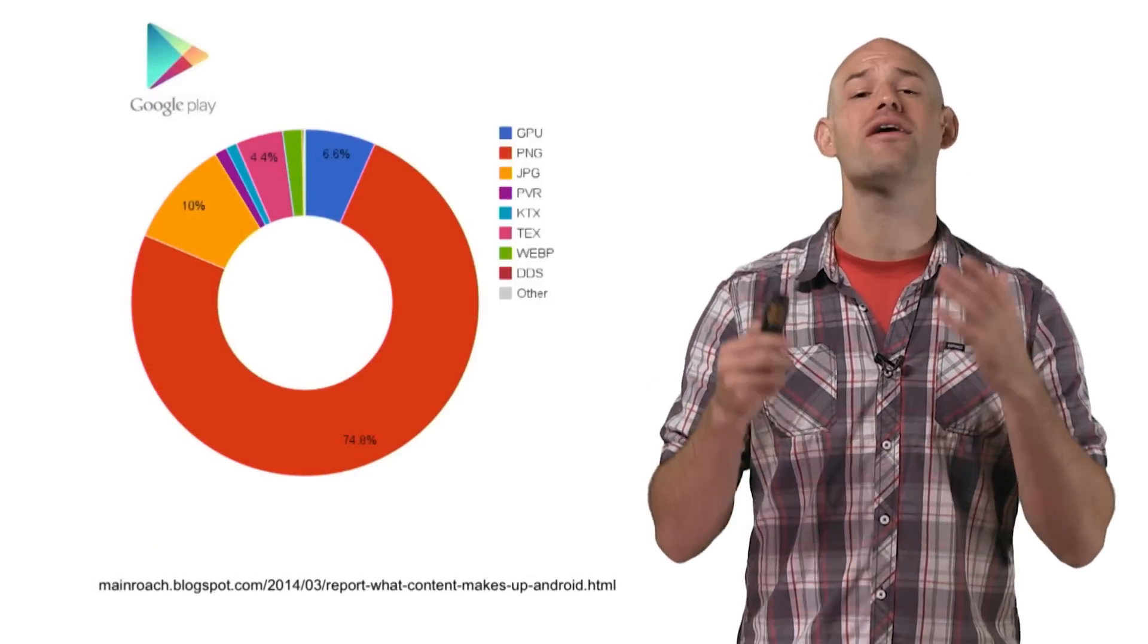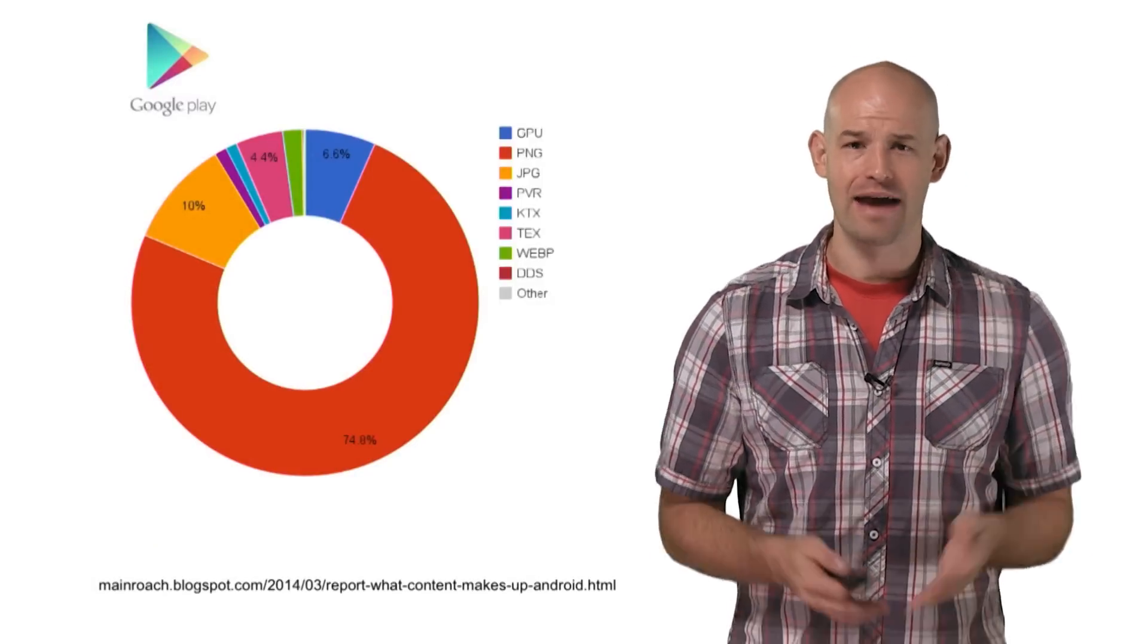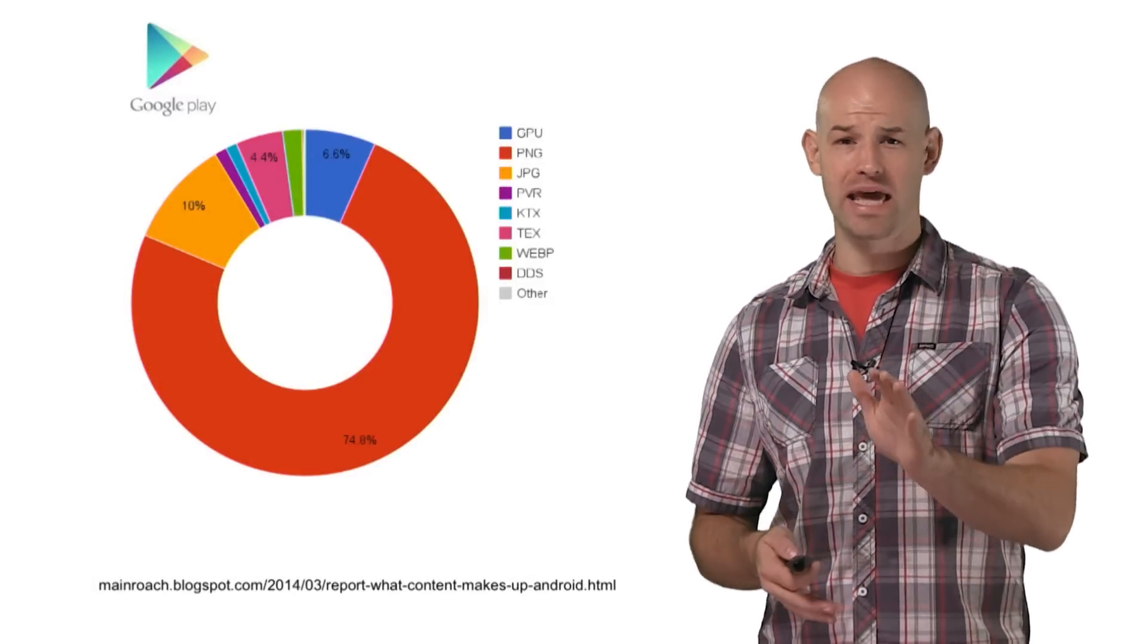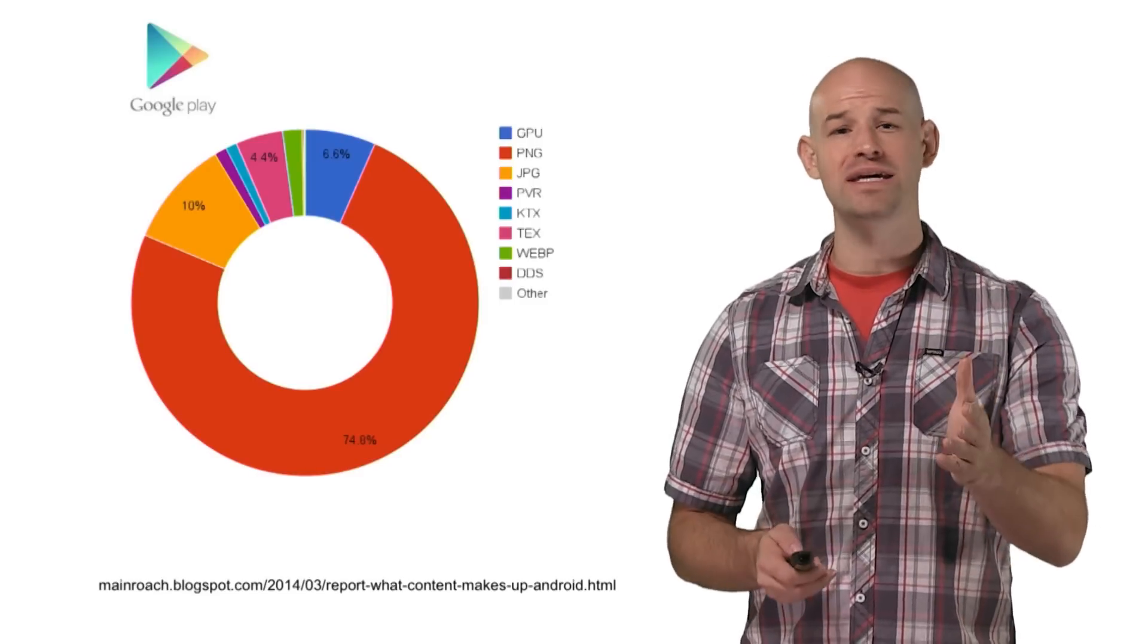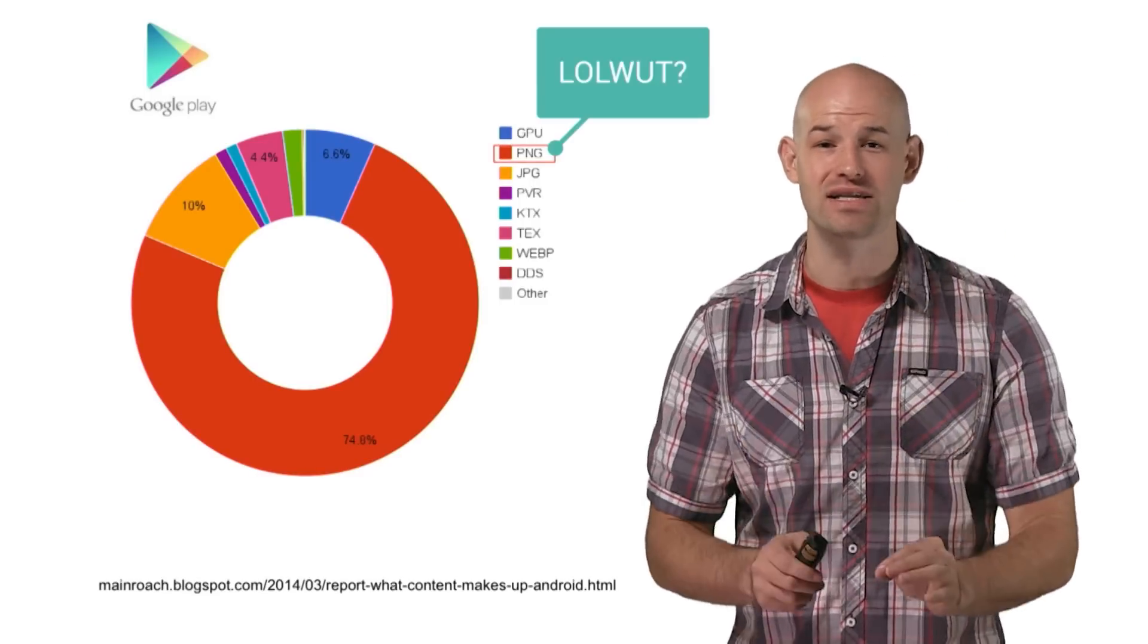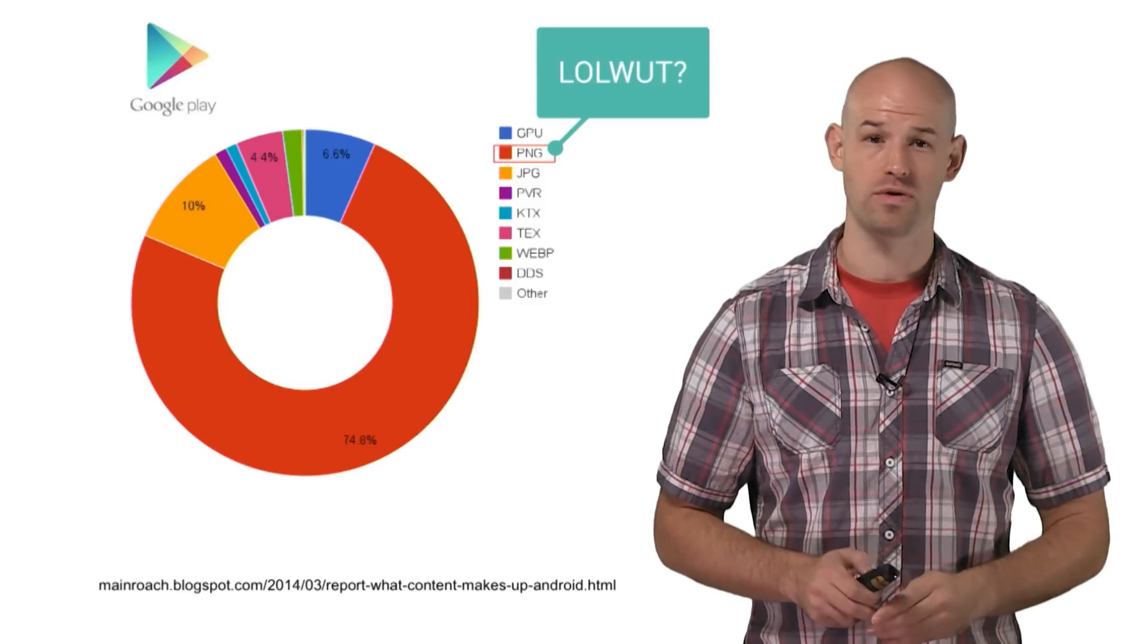And the truth is that PNG files are everywhere in mobile development. After analyzing 1,000 of the top games on Google Play, it was discovered that PNG files accounted for more than 75% of all textures for those games.